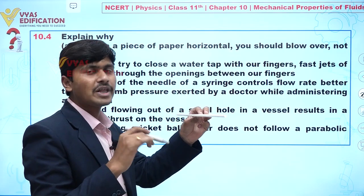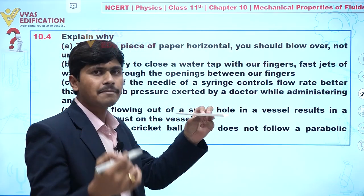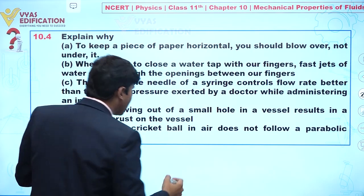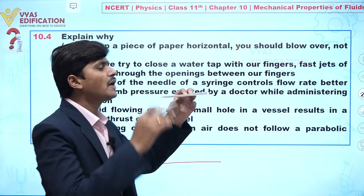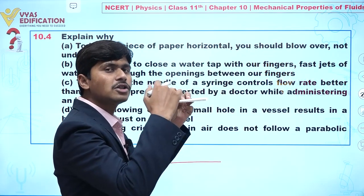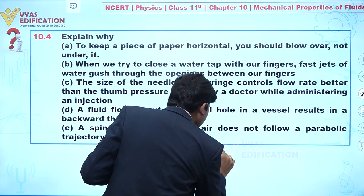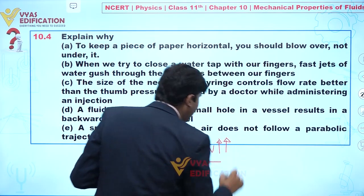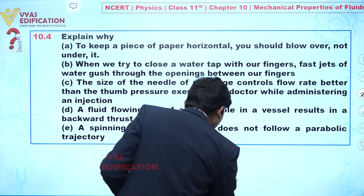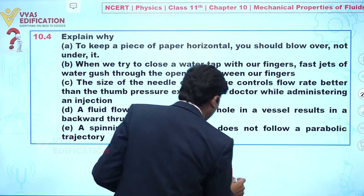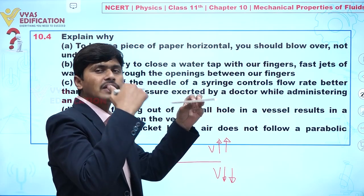Now, if I am blowing air on the top — that is, over this paper — what will happen? What I am actually doing is: if this represents the paper and I am blowing air over the top of it, I am increasing the velocity on the top. At the same time, the velocity below becomes less compared to the top part.